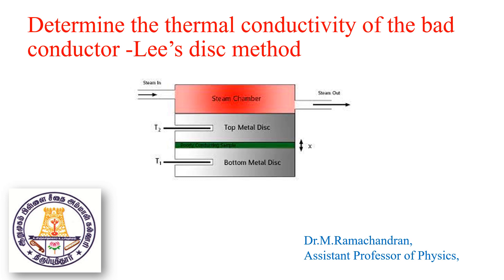Today we discuss the topic: to determine the thermal conductivity of the bad conductor by the Lee's disc method. In this diagram the Lee's disc apparatus is shown. One is the bottom brass disc B, which is connected with the steam chamber. Steam is passed through the upper end of the brass chamber and circulated through that particular space, where heat is transferred from the bad conductor.